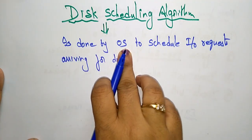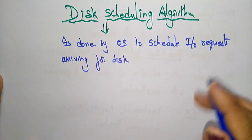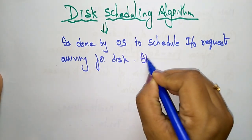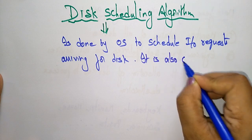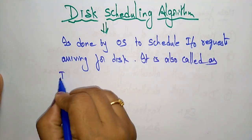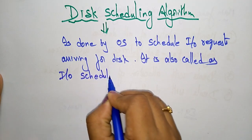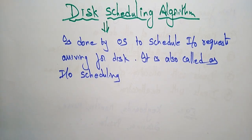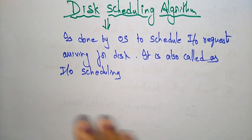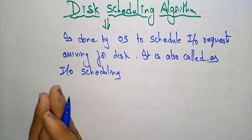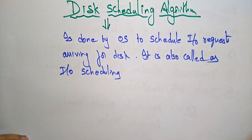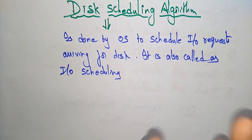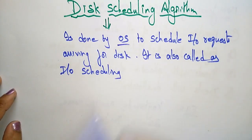Disk scheduling is also called IO scheduling, because IO (input/output) is requesting the disk to perform some operation. When multiple IO requests arrive, the operating system has to choose an order to serve the requests — which IO request gets served first — and that order has to be designed by the operating system itself.